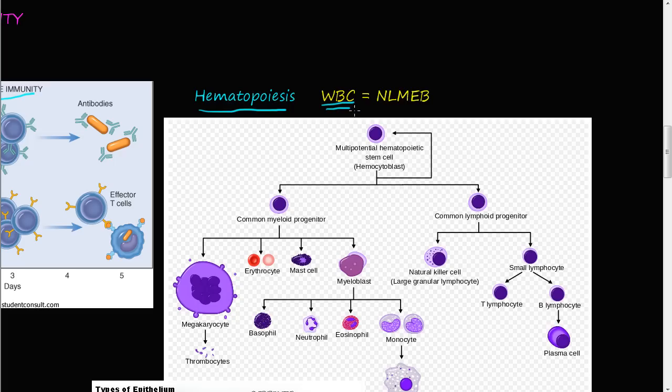Here is a little acronym to help you remember the white blood cells: Never Let Monkeys Eat Bananas — NLMEB. So you have neutrophils, lymphocytes, monocytes, eosinophils, and basophils.